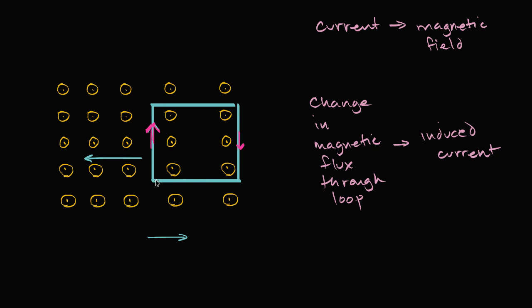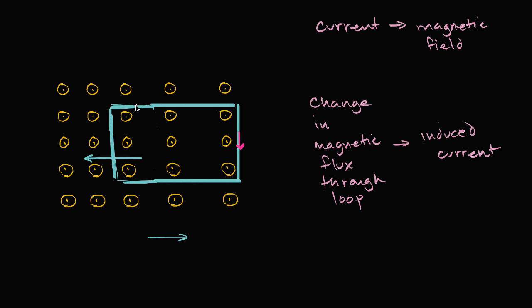There are other ways to change the flux. You could actually change the area of this loop — if somehow it were made of stretchy wire. If you were able to stretch it out so that the actual area increases, that would cause the flux in the out-of-the-screen direction to increase even more, and that also would induce a current.